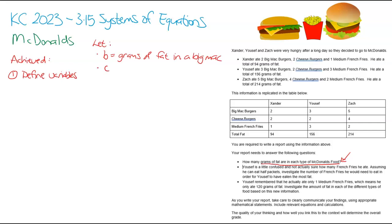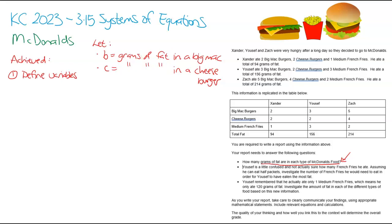Moving on to C - C is equal to the grams of fat in a cheeseburger. And then finally, F for French fries, representing the grams of fat in a medium French fries. So that's step number one - I've defined my variables.